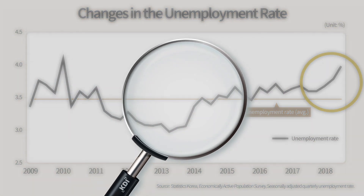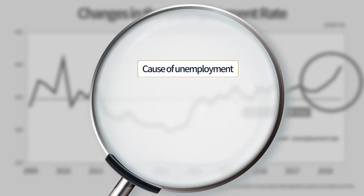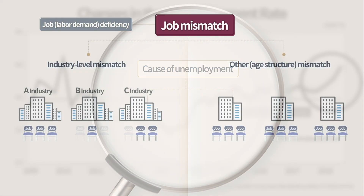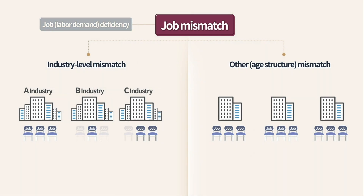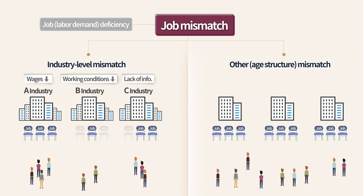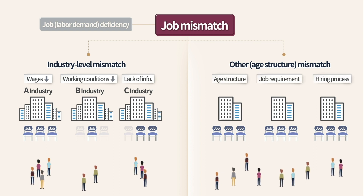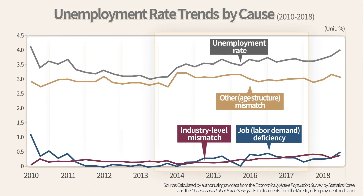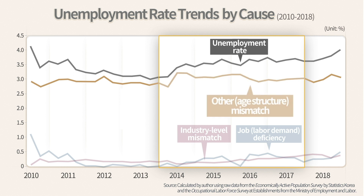Accordingly, KDI conducted an analysis to examine the recent increase in the unemployment rate from both a job deficiency and job mismatch perspective. Mismatch unemployment was divided into industry-level and other mismatch unemployment. Industry-level mismatch occurs when unemployed workers are unable to move seamlessly across industries due to restrictions such as wages and information.